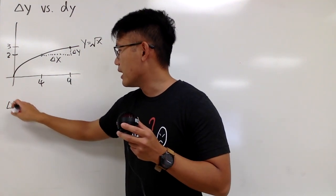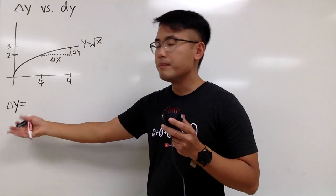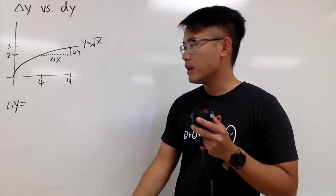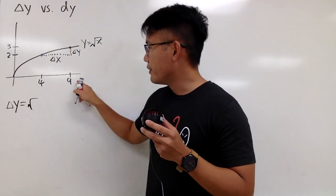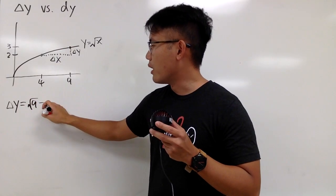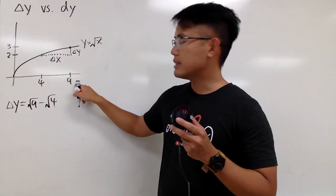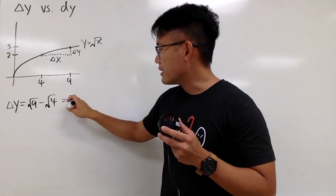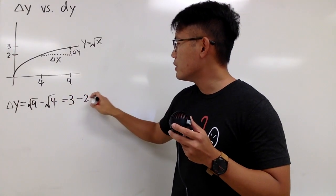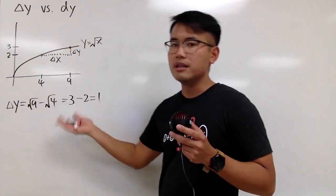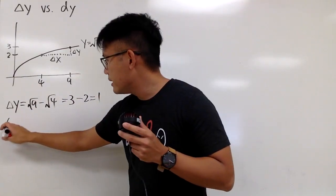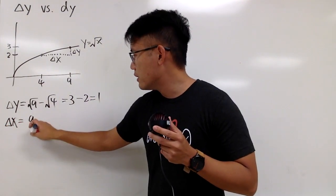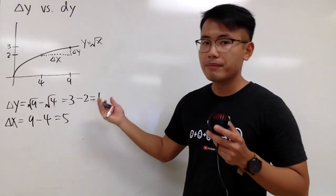Delta, let's do delta y first. Delta y, we went from 2 to 3, so you can just do 3 minus 2. The change is 1. But let me actually write down square root of 9 minus square root of 4, because I plug in the x values into the function to get the y values. And then this gives me a nice number 3, and this is 2. So in this case, delta y is 1. And the delta x, as we can see, we went from 4 to 9. So that's just 9 minus 4, and that's equal to 5. And we're done.